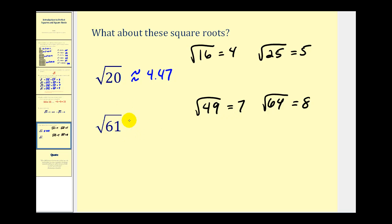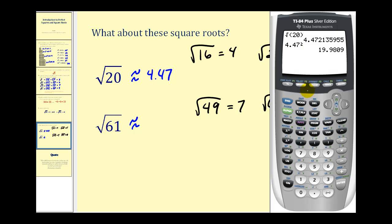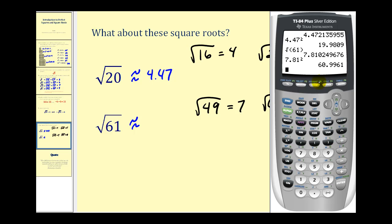Let's use our calculator to get a decimal approximation of the square root of sixty-one. We press second, x-squared, type in sixty-one, close parenthesis, and press enter. It's approximately seven point eight one, which means if we take seven point eight one and multiply it by itself, we should get approximately sixty-one — and as we can see, it's slightly less than sixty-one because we did round.